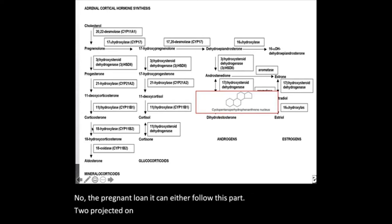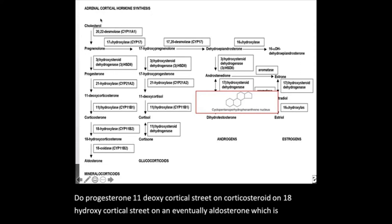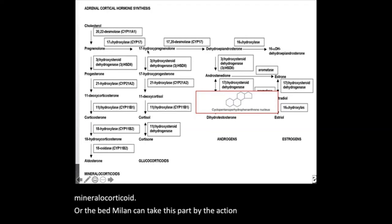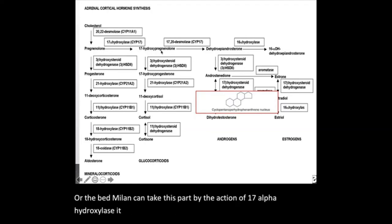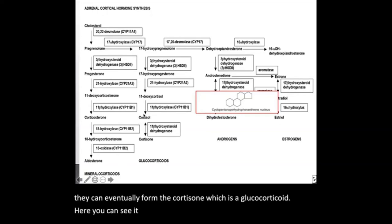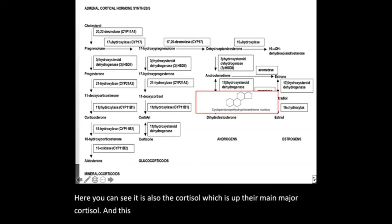Pregnenolone can either follow the path to progesterone, 11-deoxycorticosterone, corticosterone, 18-hydroxycorticosterone, and eventually aldosterone, which is a mineralocorticoid. Or pregnenolone can take the path via 17-alpha hydroxylase, converting into 17-hydroxypregnenolone and eventually forming cortisol, which is a glucocorticoid, along with cortisone.